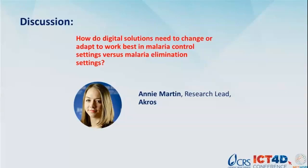In higher transmission settings, widespread vector control is going to be very effective in curbing incidence — for example, indoor residual spraying and bed net distribution. Once transmission drops, vector control needs to be more targeted to where hotspots of disease are. So we need to know where cases actually are, and we need better surveillance to inform that.